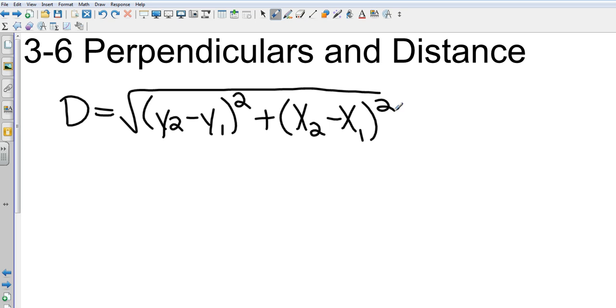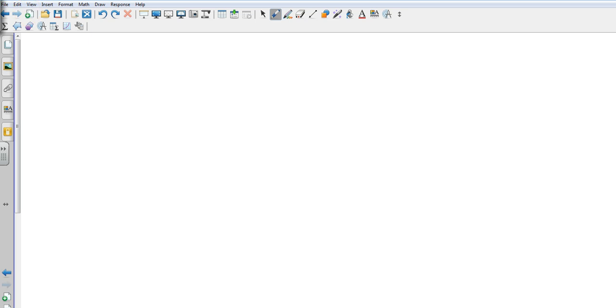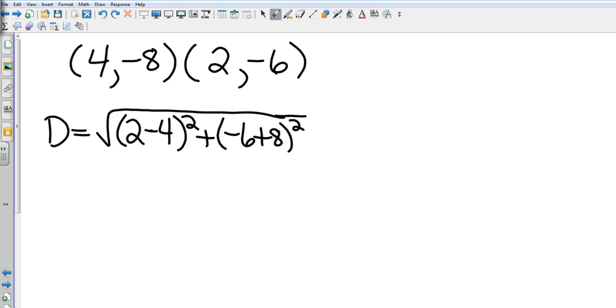All right, so do what? Tangent is trigonometry. Okay, so let's take an example. Let's just do a distance problem real quick. If I give you the points 4, negative 8, and 2, negative 6, I want you to find the distance. Okay, so go ahead and substitute in and find the distance.